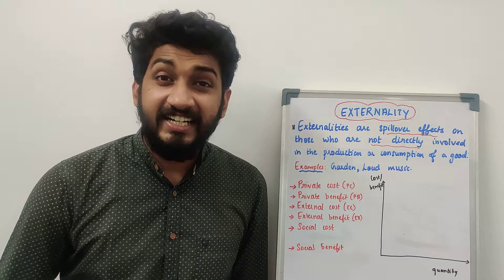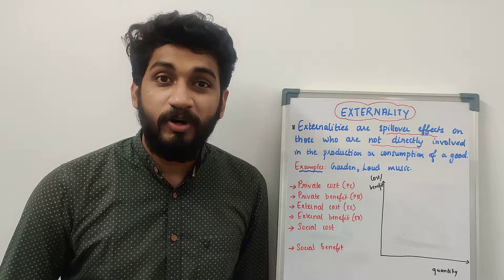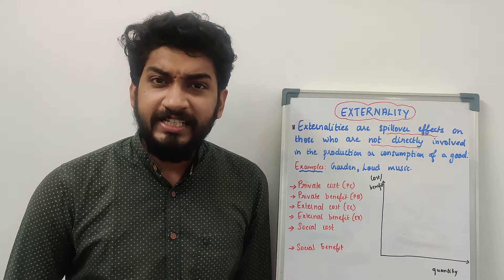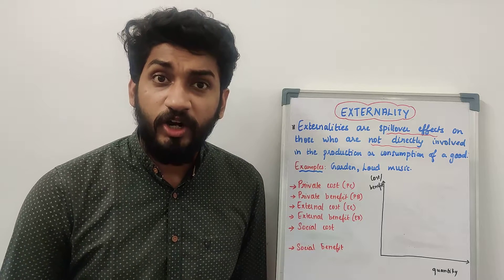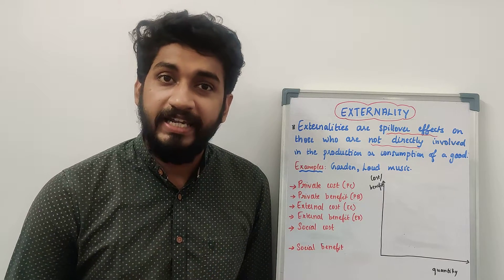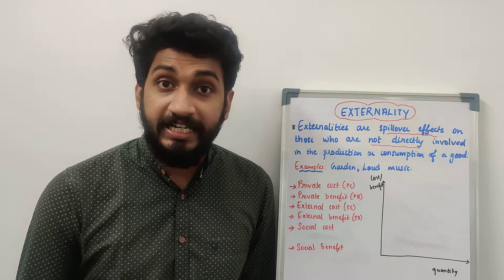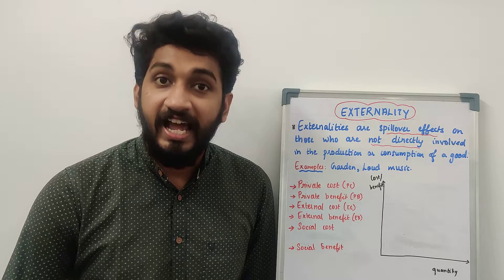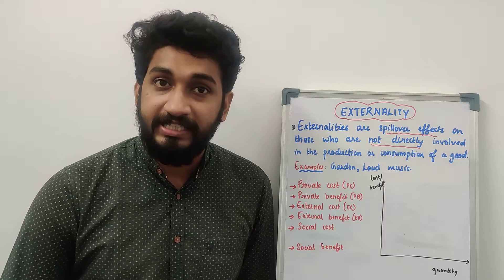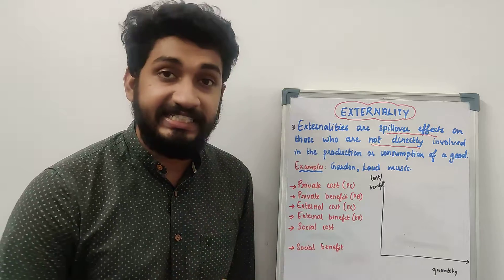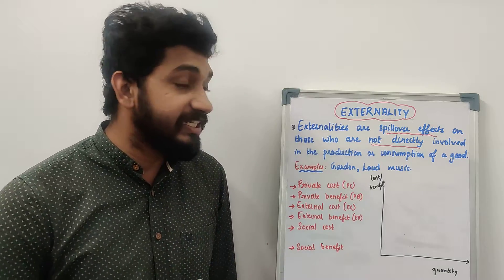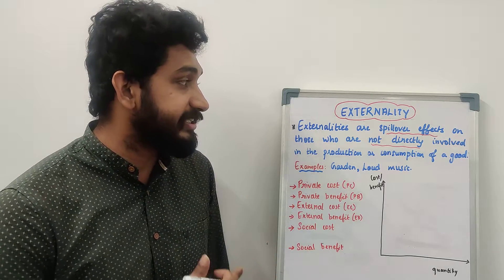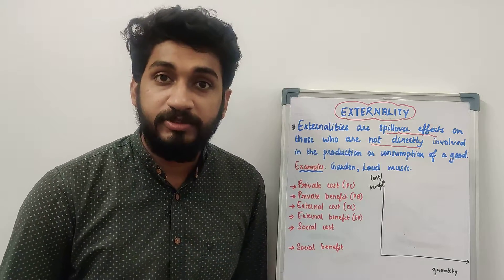Hello everyone. In understanding demand and supply, we discuss about the willingness and ability of producers and consumers. Did we realize that there are third parties who are not directly involved in the process of buying or selling but are either benefited or affected? We did not take them into consideration, and these are the spillover effects. In economics, we term these as externalities — spillover effects on those not directly involved in the process of production or consumption of a good.